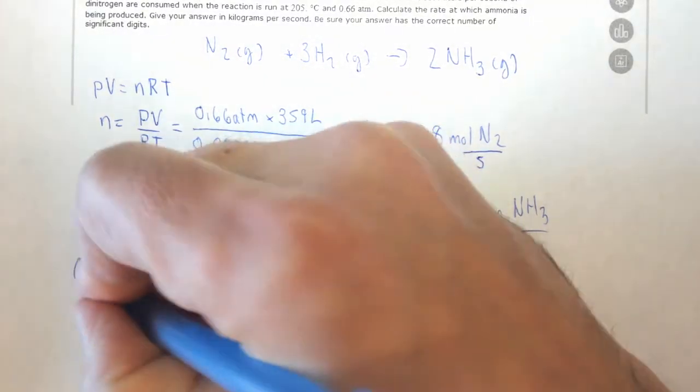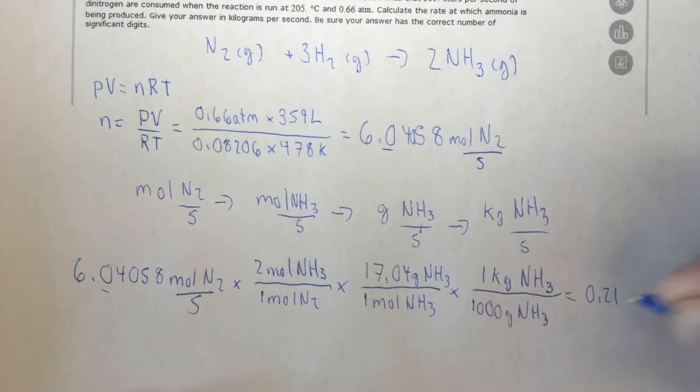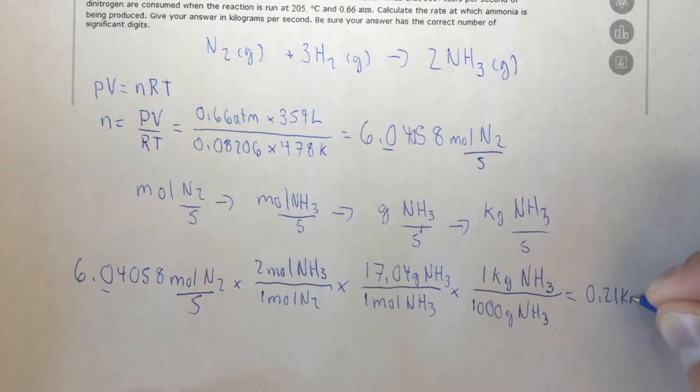You're going to round to two significant figures, because this is the limiting sig fig, and you're going to get 0.21 kilograms of NH3 per second.